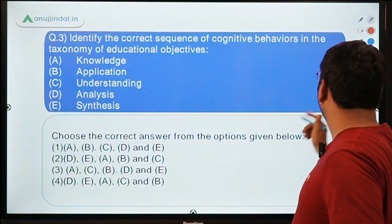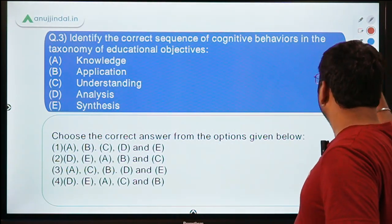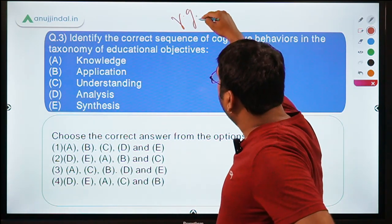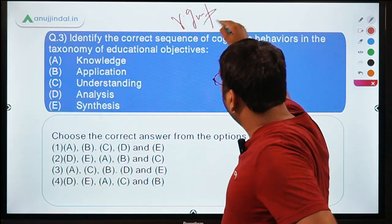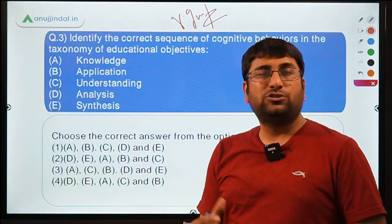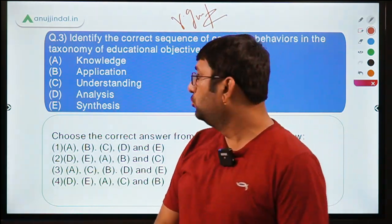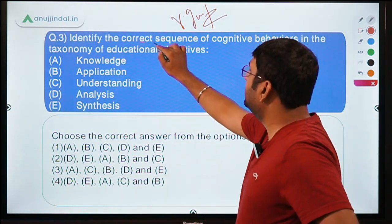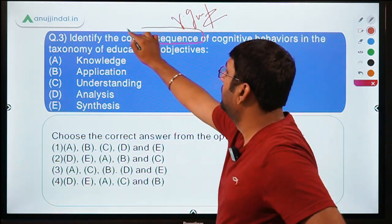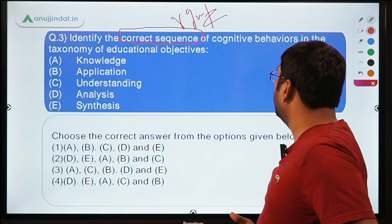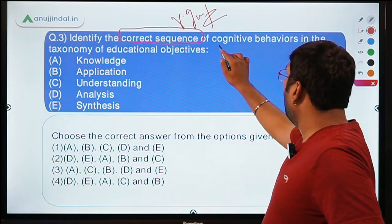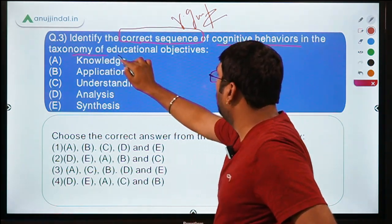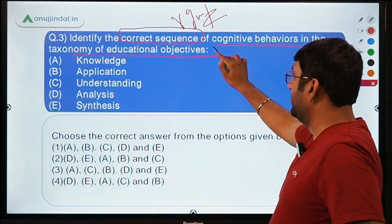I hope that question is well clear. Let's move to the third question. This is a very important topic — I covered it in the first live session — please go and watch the correct sequence of cognitive behaviors in the taxonomy of educational objectives.